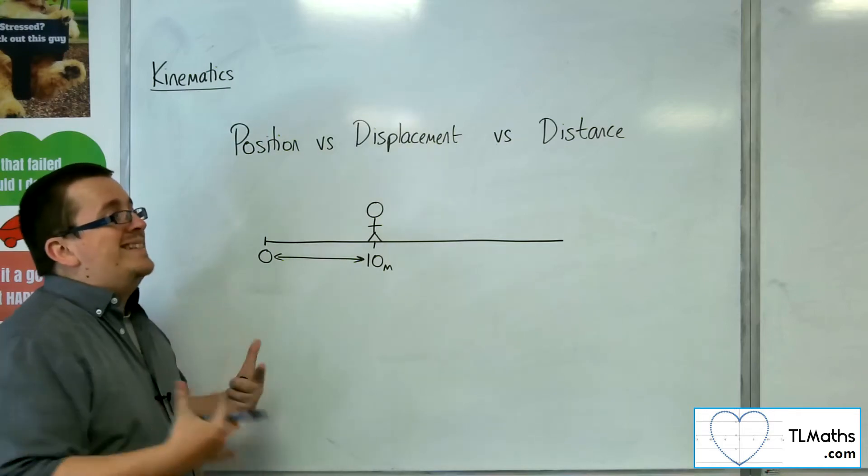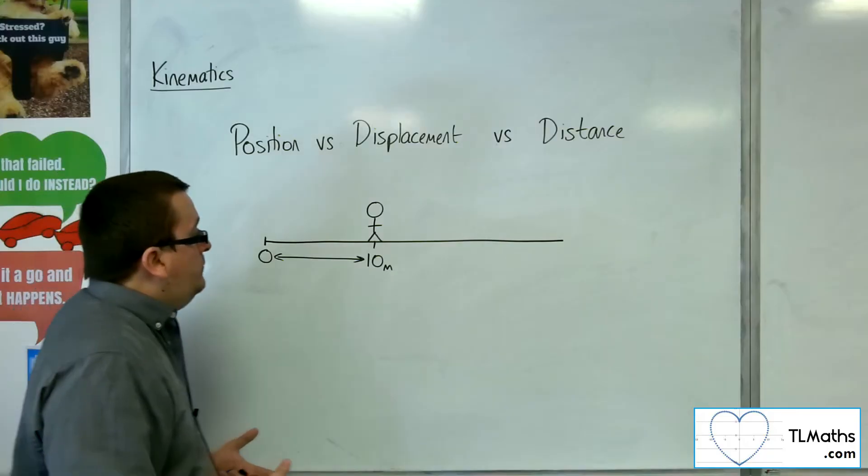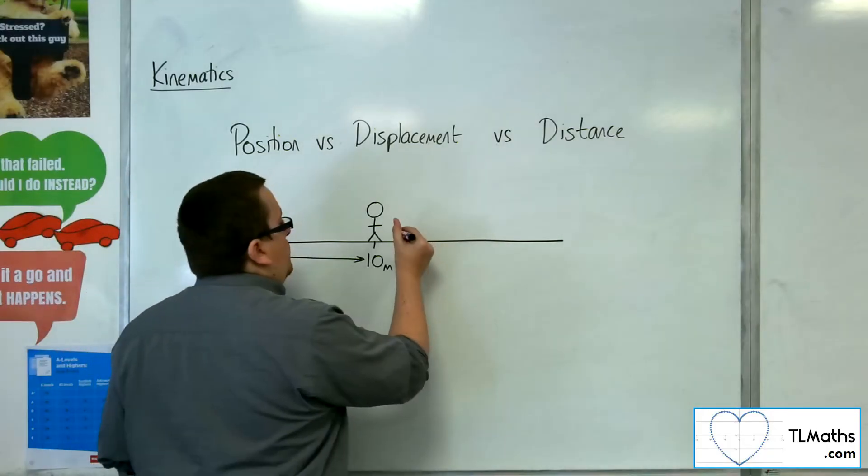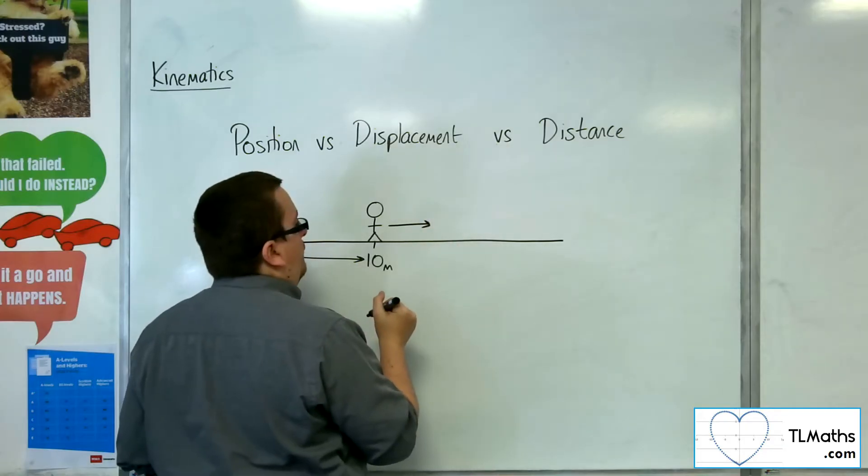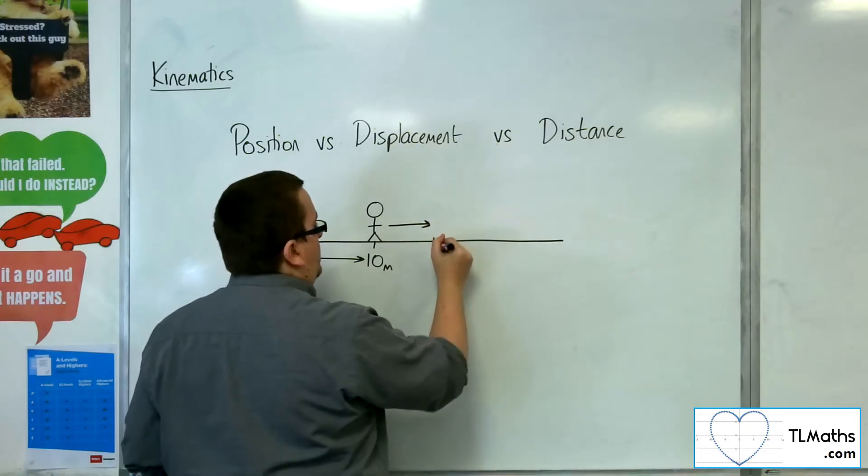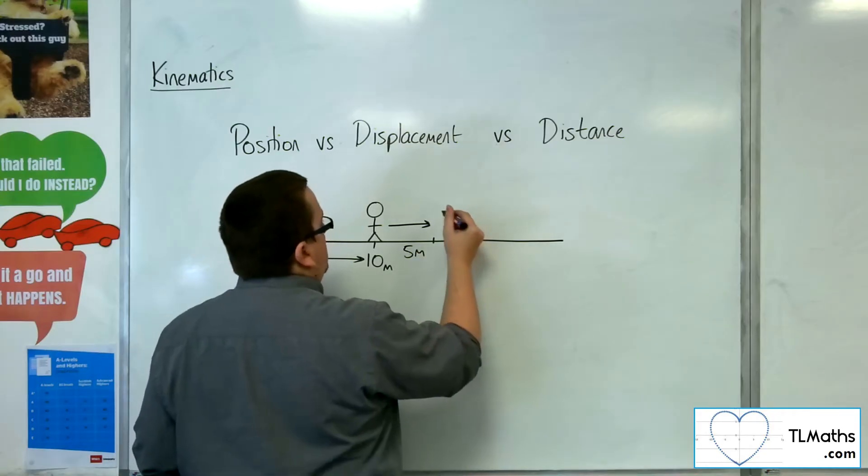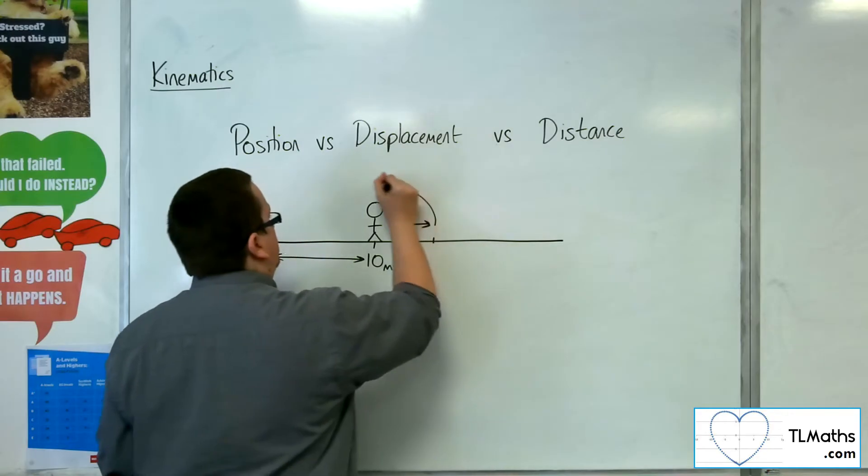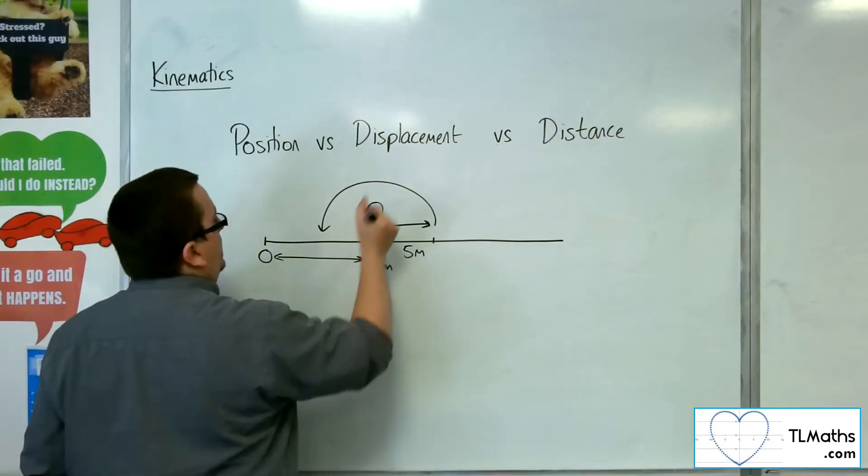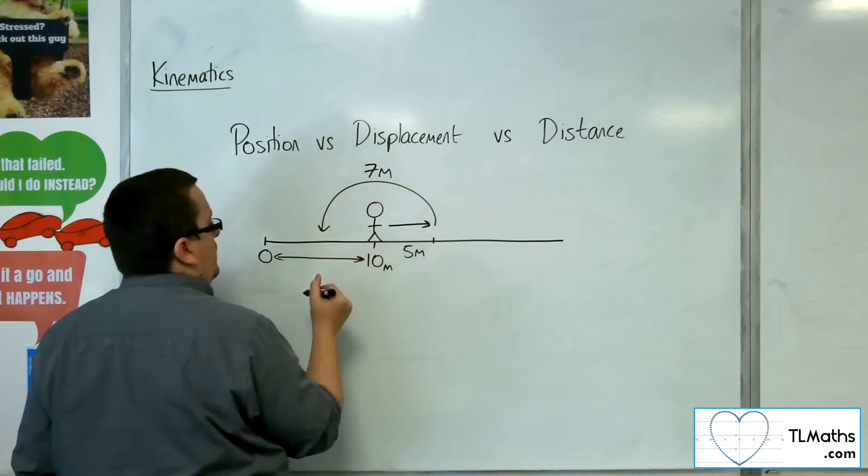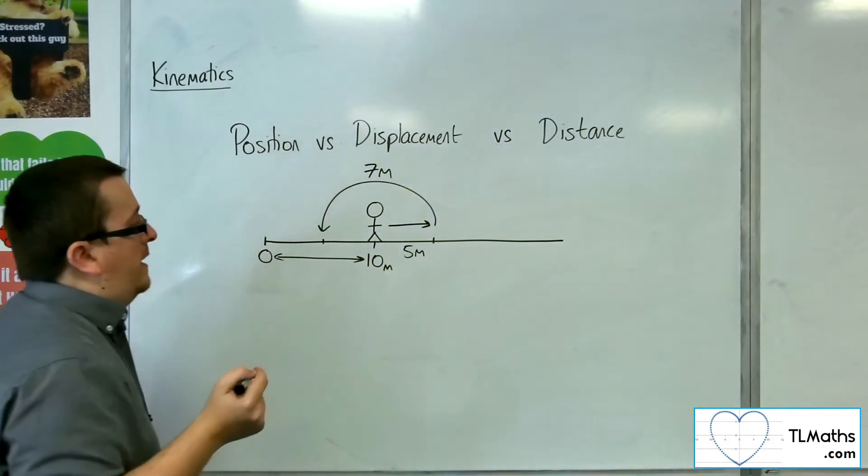So then let's say that he starts walking. And what they do is they first of all walk 5 metres in this direction. And then they walk back, let's say, 7 metres in this direction and end up in this position here.